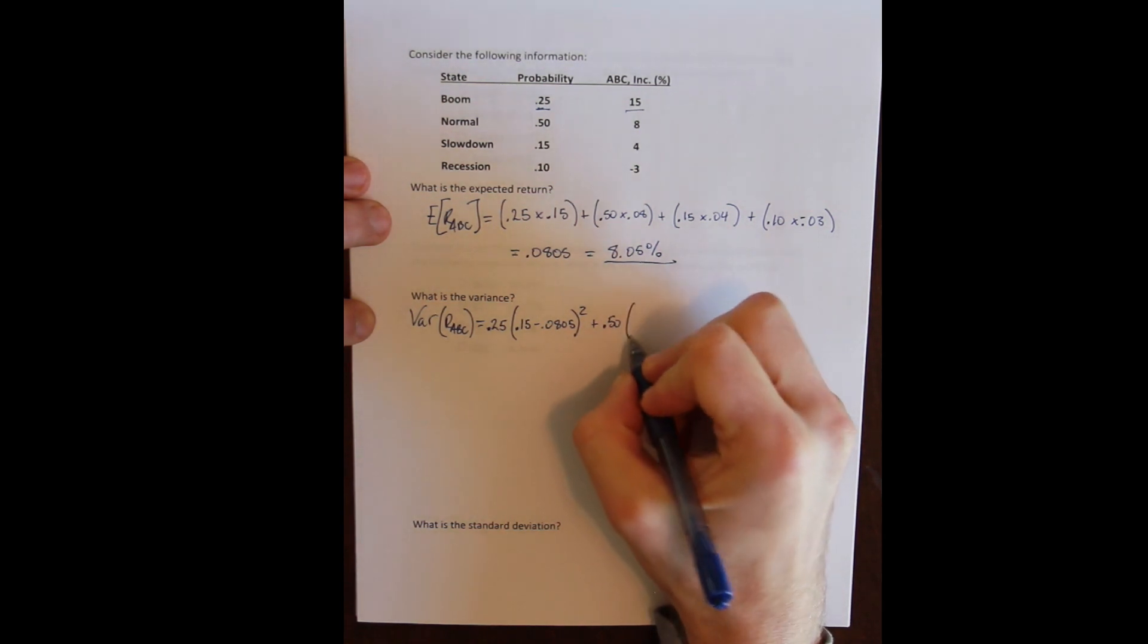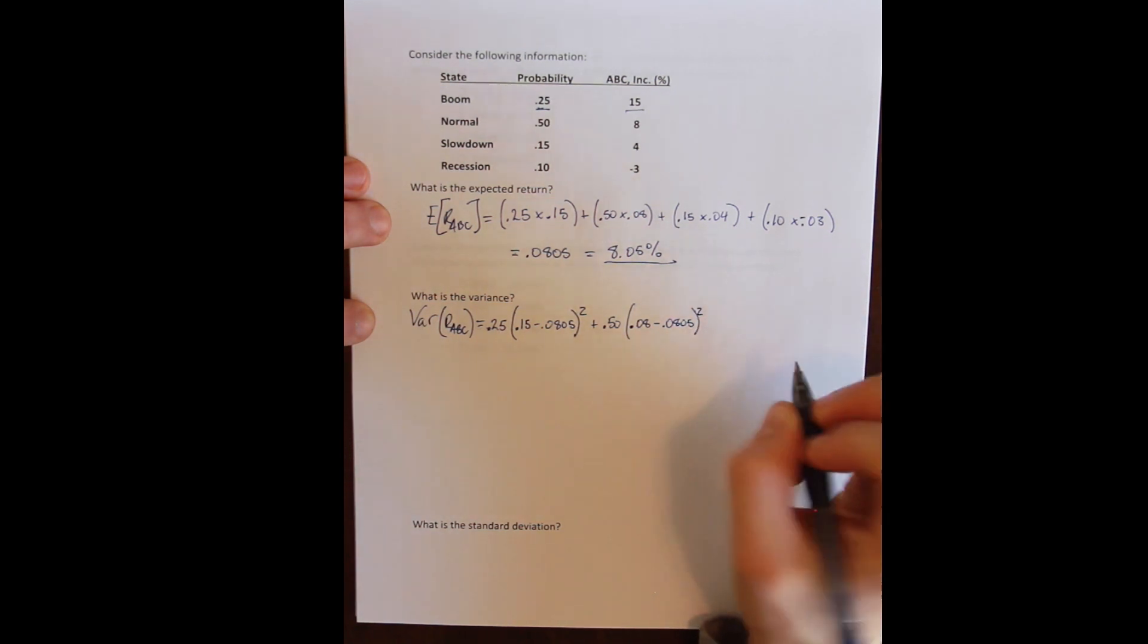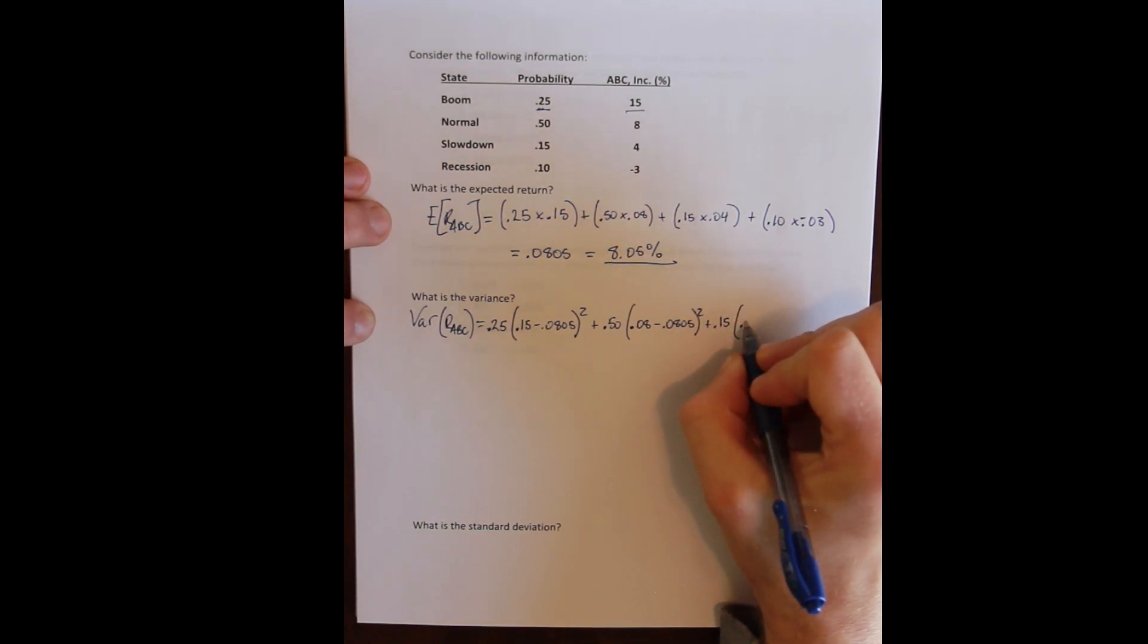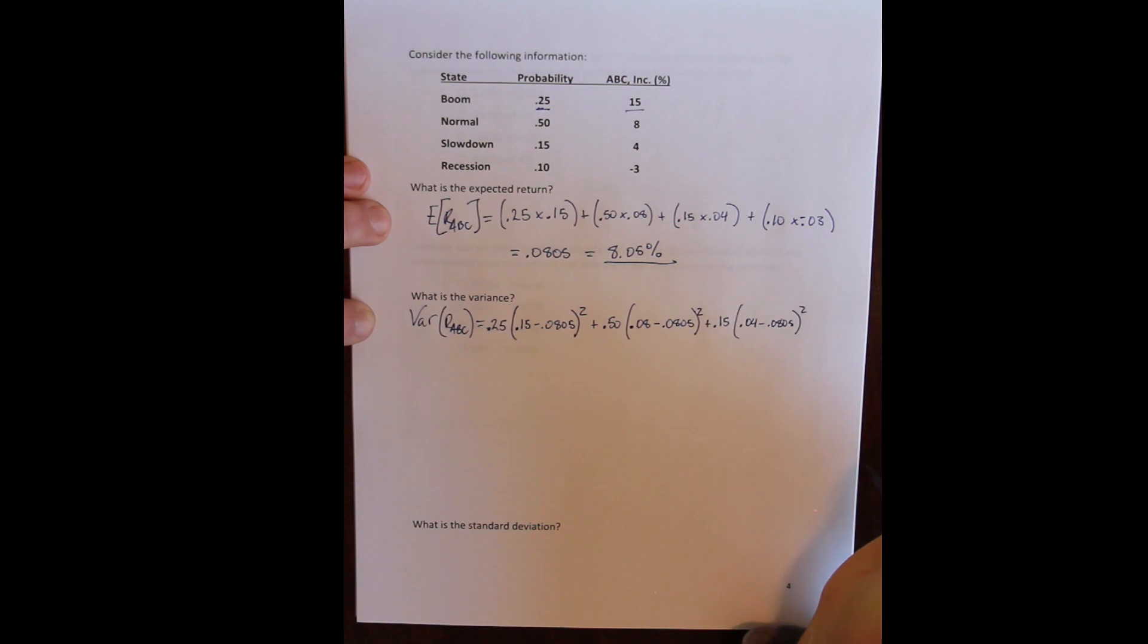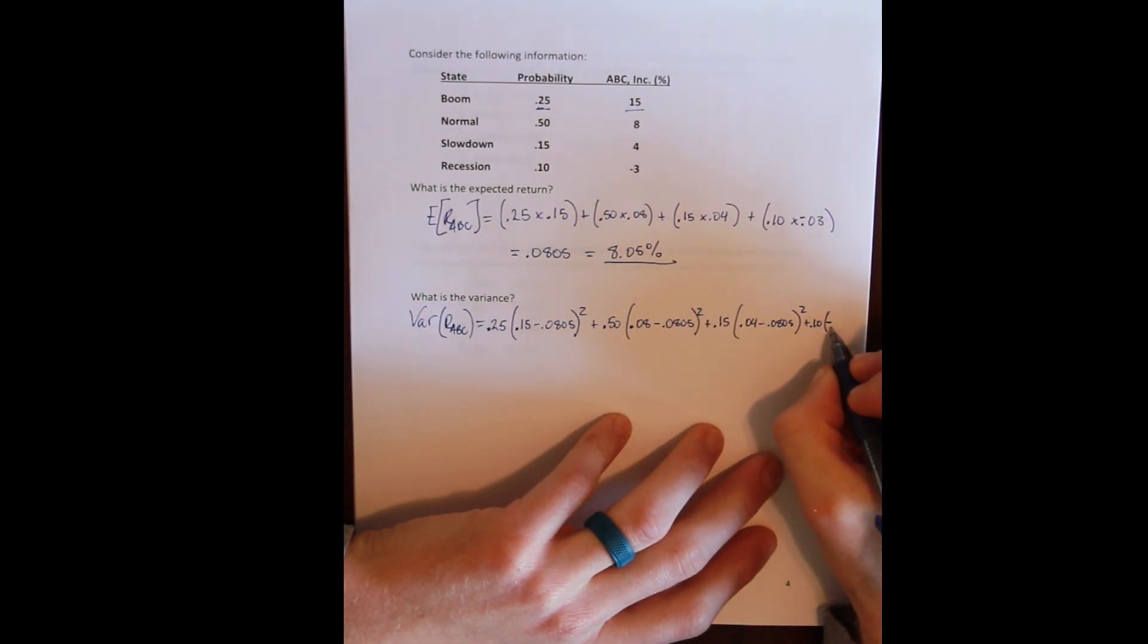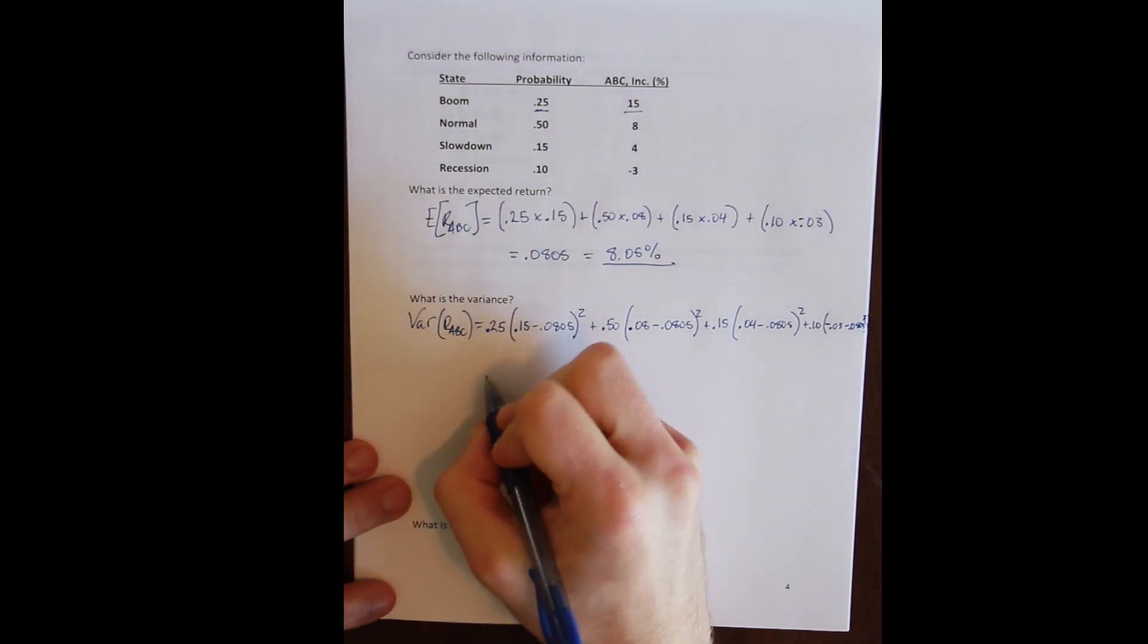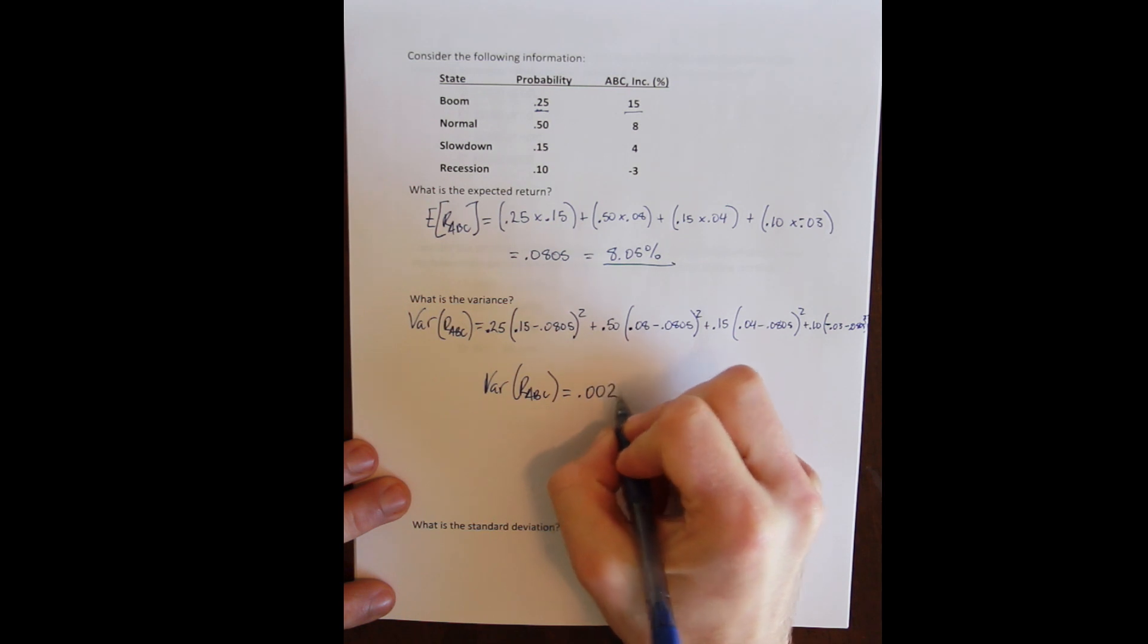Plus a 50% chance of a normal state times the difference between the actual return in the normal state which is 8% and the expected return which is 8.05% squared, plus a 15% chance of a slowdown times the difference between the actual return in the slowdown which is 4% and the expected return squared. Finally, there is a 10% probability of a recession times the difference between the actual return negative 3% minus the expected return 0.0805 squared. Do our algebra correctly and calculate the variance of the return on ABC to be 0.002674.